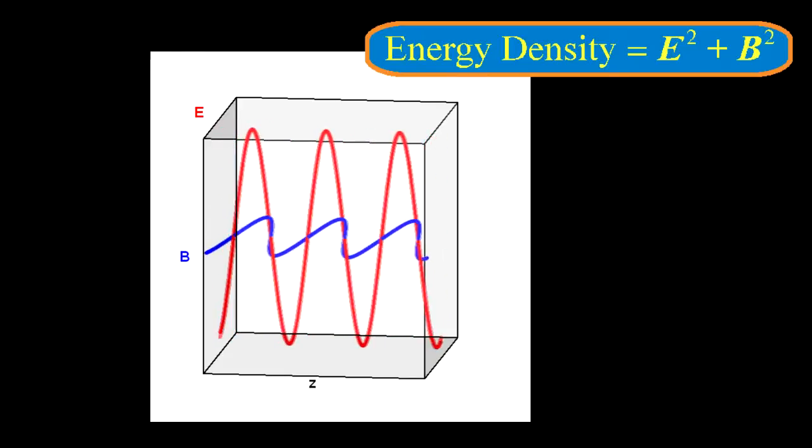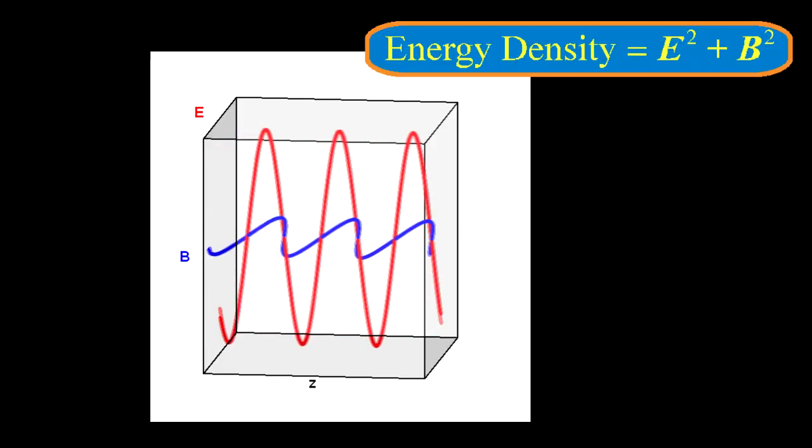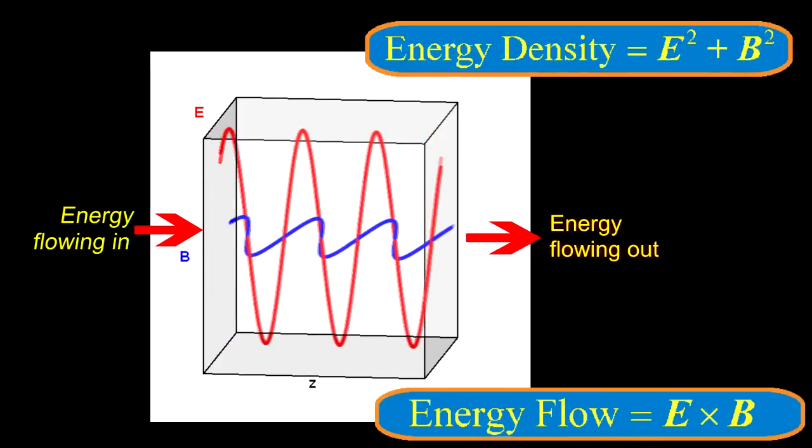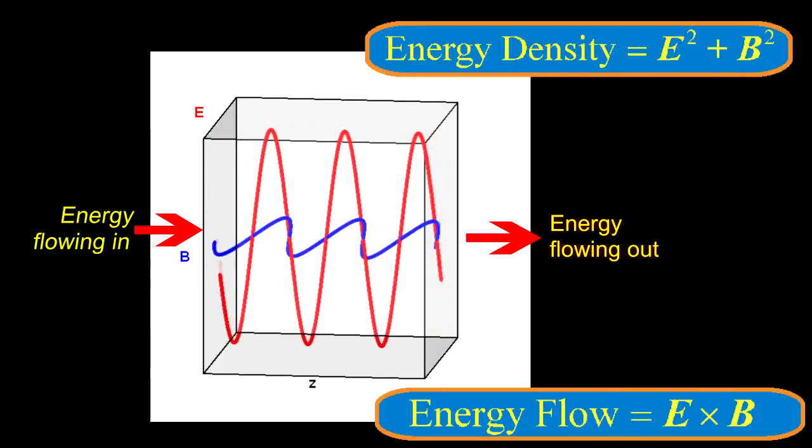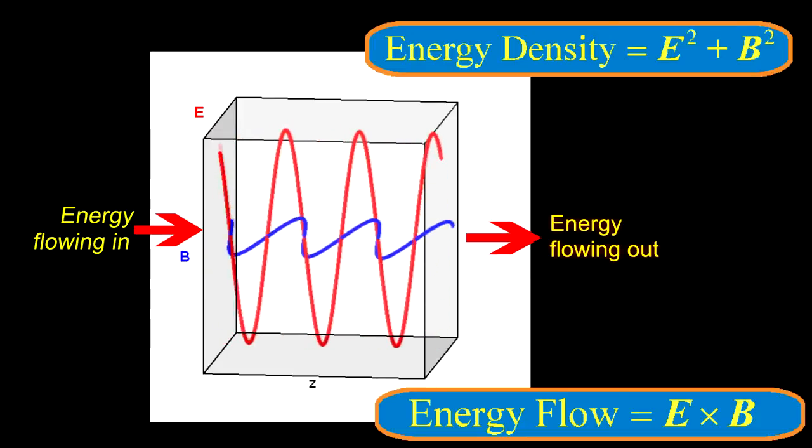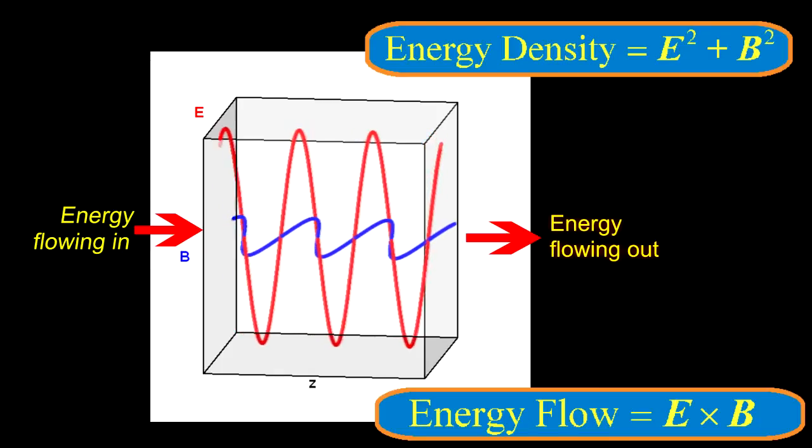Now, once you allow the fields to contain energy, you have to decide how much energy is flowing when the field moves. This is expressed as a flux, which is the energy flowing through a unit area and a unit time. Physicists in the 1800s worked it out to be E cross B.